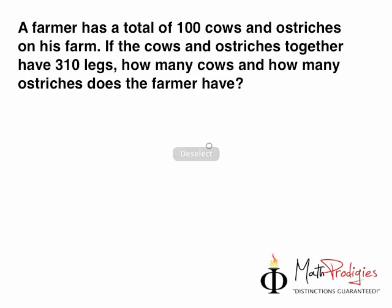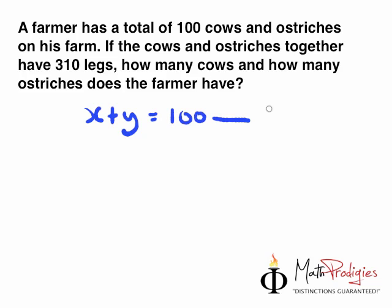Now, how do we do this question? Very, very easy. Read the question. A farmer has a total of 100 cows and ostriches on his farm, which means x plus y. Of course, you have to write down: let x be the number of cows, let y be the number of ostriches. x plus y equals 100 — that is your very first equation. And for your second equation, you read the question.